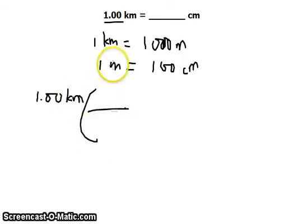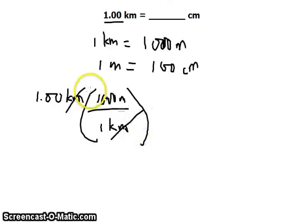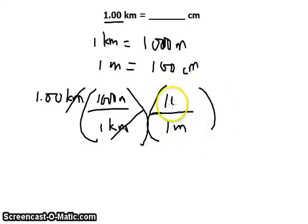Multiply it by the first conversion factor, 1 kilometer and 1,000 meters in the numerator. Kilometer would have to cancel. And multiply it by the next conversion factor, that is 1 meter is equal to 100 centimeters. Meter would have to cancel out.